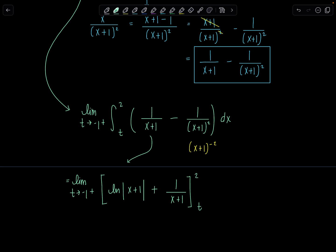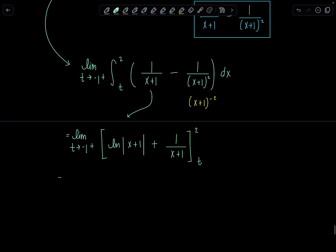Good? Okay. Now let's plug in our upper and lower limits. So limit t approaches negative 1 from the right. I'm going to have natural log of 3 plus 1 over 3 minus, and then let's put some extra parentheses, natural log absolute value t plus 1 plus 1 over t plus 1. Okay. How are we doing up to here? Hopefully up to this point was pretty straightforward.